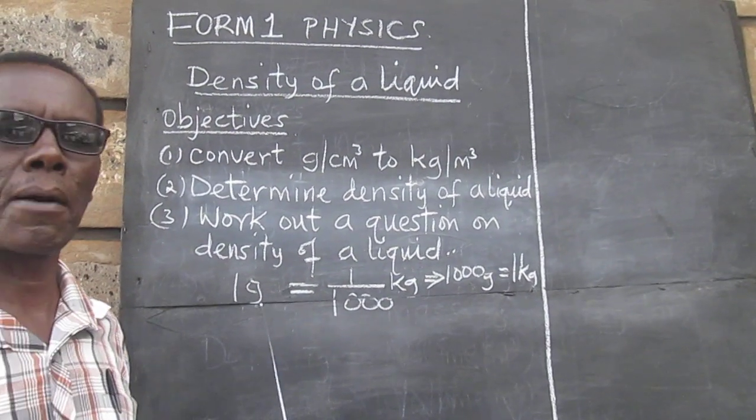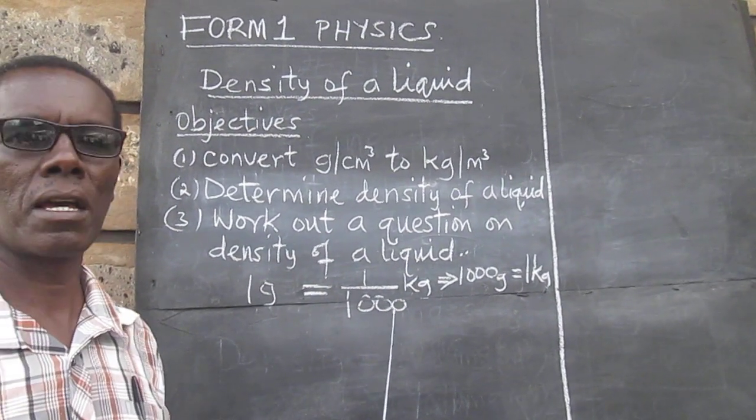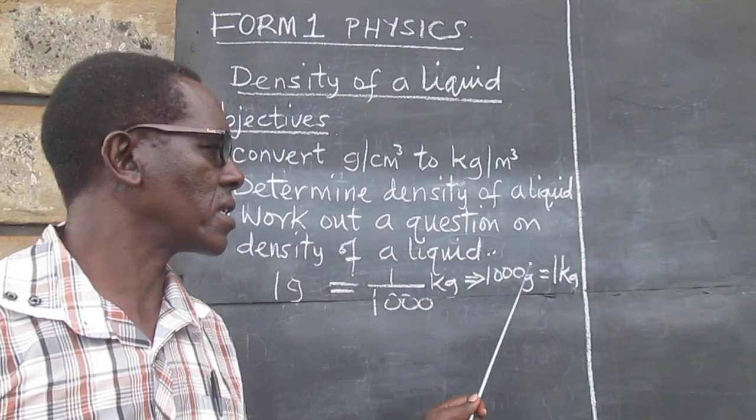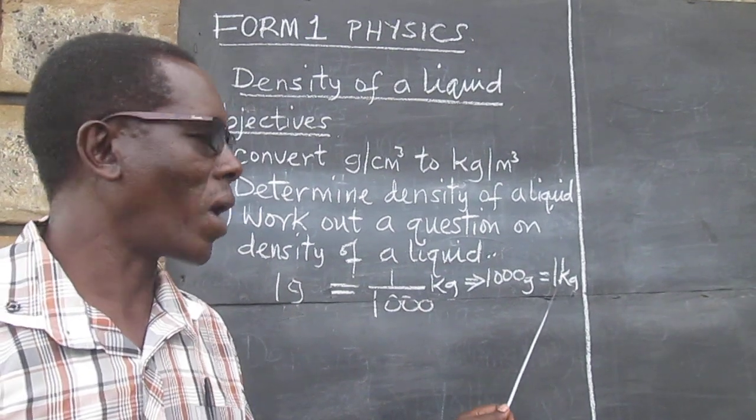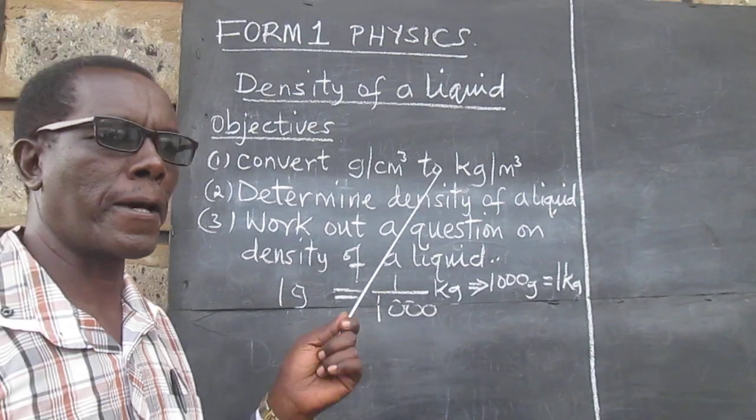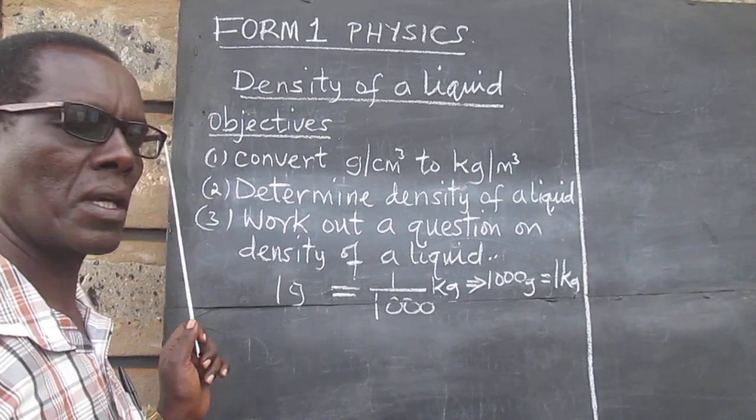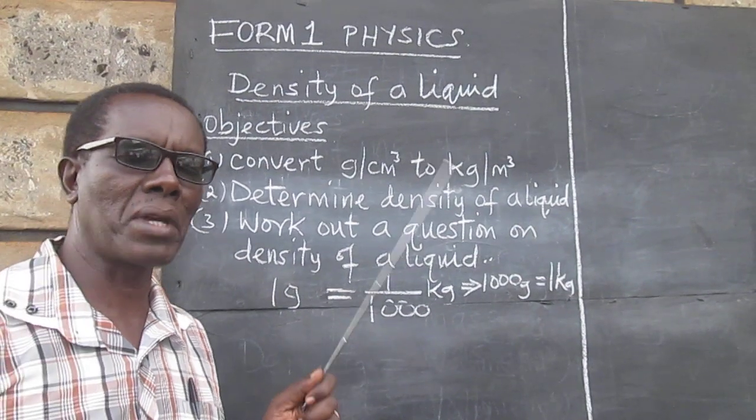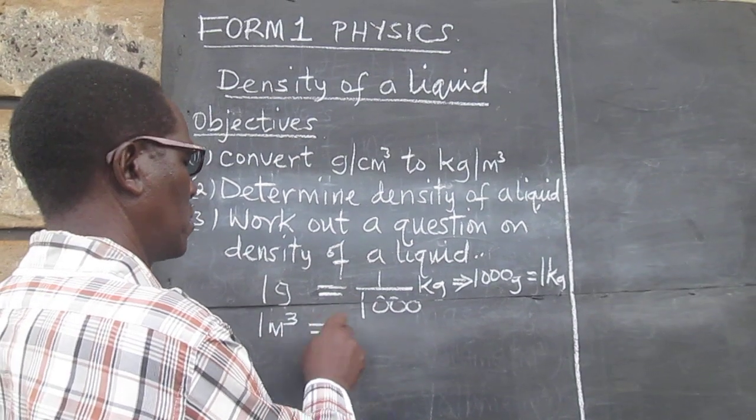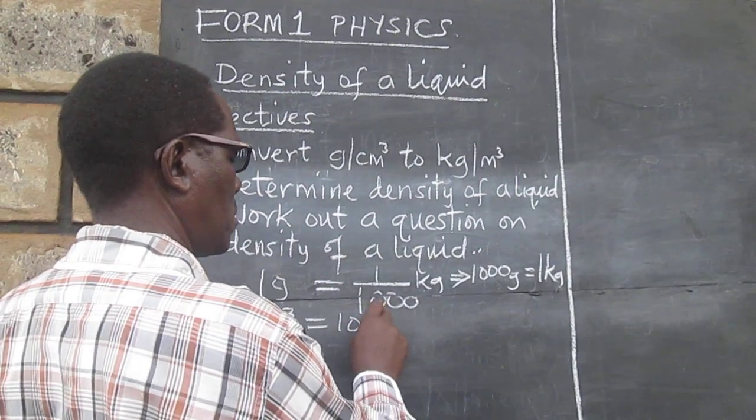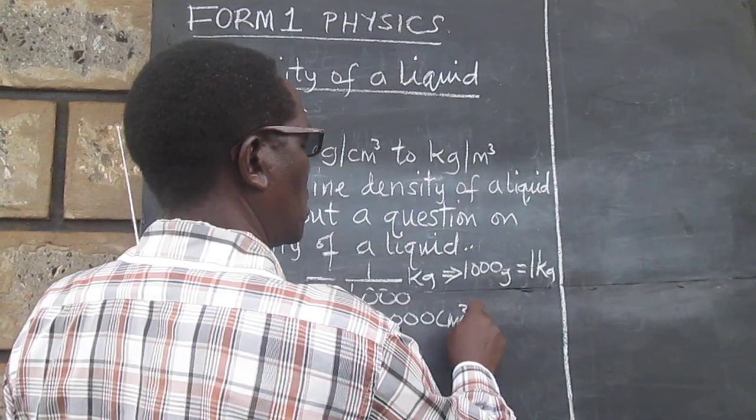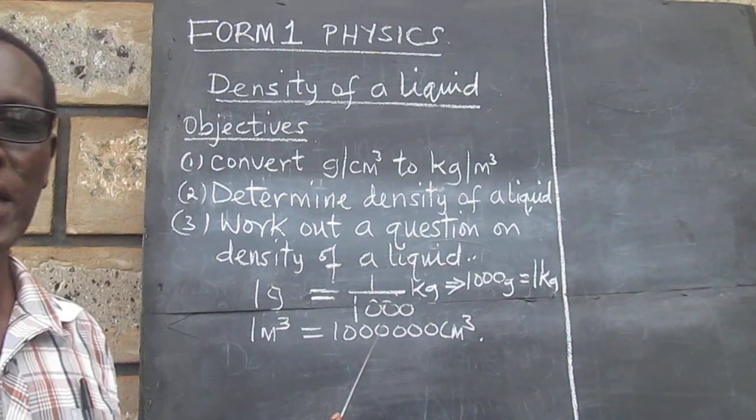We know that 1 gram is a thousandth of a kilogram, or in other words, 1000 grams is equivalent to one kilogram. We also know that 1 cubic meter is equal to 1 million cubic centimeters.